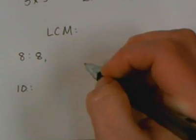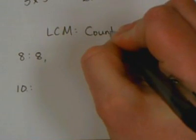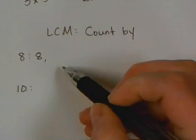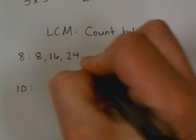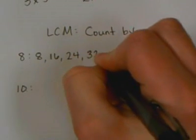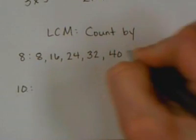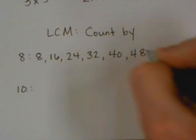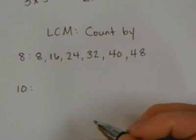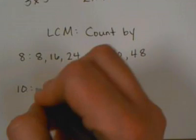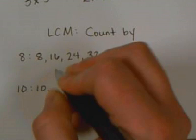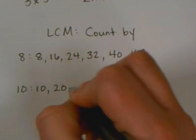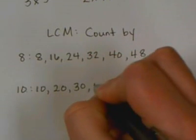If we actually list the multiples for 8, and by the way we're counting by these numbers, we're going to think count by. So we're just going to count by 8's: 8, 16, 24, 32, 40, 48. Now let's try 10 and see if we can get close. We're going to take 10, counting by 10's: 10, 20, 30, 40.